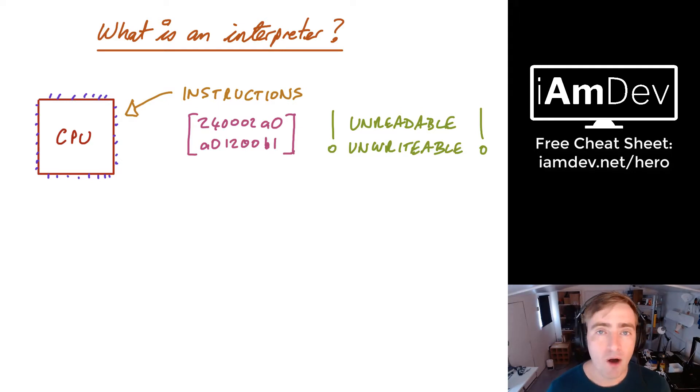And so that's where programming languages evolved. But in order to turn a language into machine code, you needed a compiler that basically translated it for you so the CPU knew what it was going to run.